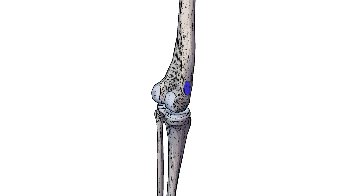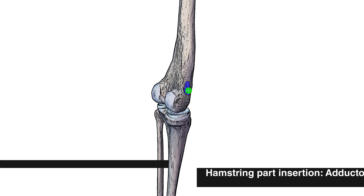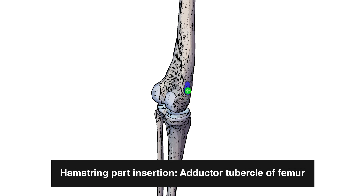Moving on to the hamstring portion of the adductor magnus next, you can see the insertion highlighted here in blue on the medial portion of the femur just above the medial condyle. This blue area is highlighting the adductor tubercle of the femur, which is going to be the insertion for the hamstring portion.